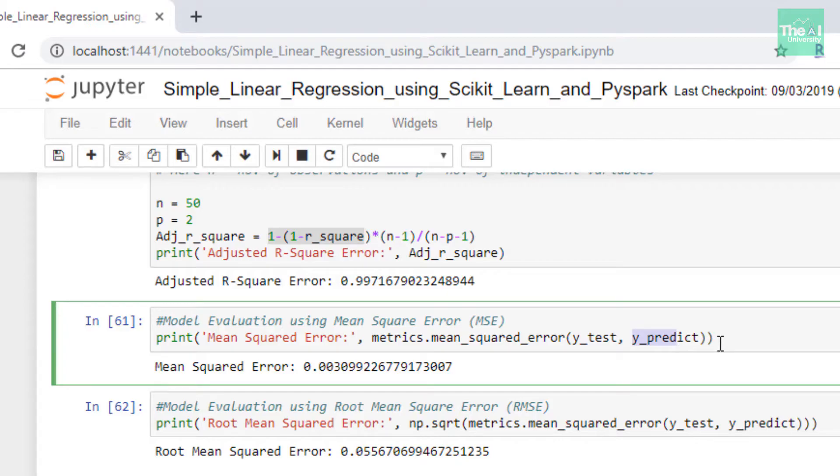So once when I ran the cell, we got the mean square error value as 0.003 which is close to 0 and hence depicting that our model is really good.